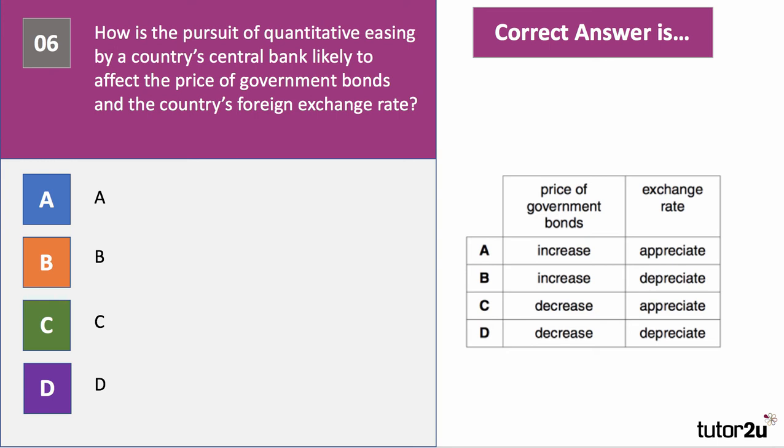Let's work through question six systematically. If the central bank is using QE, they're buying government bonds, so demand for bonds increases and the price of bonds increases — it must be A or B. If the price of bonds goes up, the yield on government bonds goes down, so interest rates are lower. With lower interest rates, hot money will flow out of the country and the exchange rate will depreciate. Therefore the answer to question six is B.